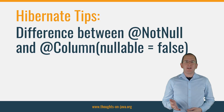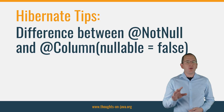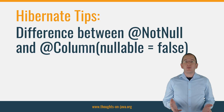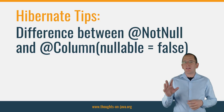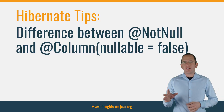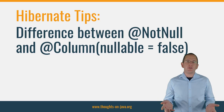Hi, I'm Torben Janssen from thoughts on java.org with a new Hibernate Tip. Today, I want to answer a question about the difference between a column mapping with nullable false and a NotNull annotation and how to use both of them.